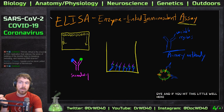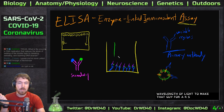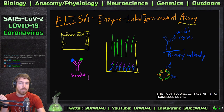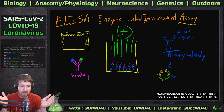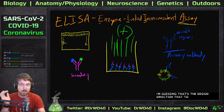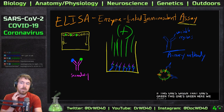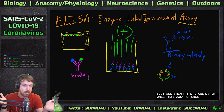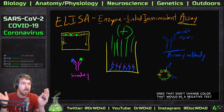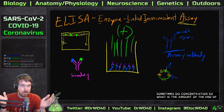The secondary antibody carries a fluorescent dye. If you hit this little well with the correct wavelength of light, it will emit fluorescence and glow — that's a positive test. Testing the 96-well plate, if this well glows green, that's a positive result. Wells that don't change color are negative tests. This can also measure concentration — the amount of antibody the person has produced.